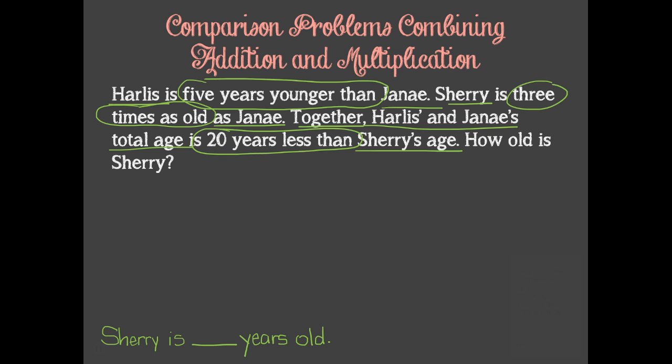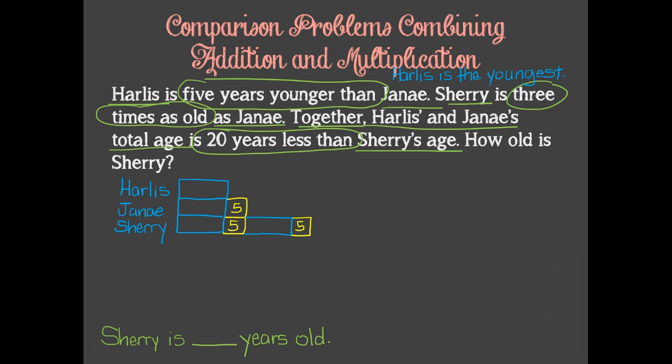Let's start everyone off with equal units this time and adjust accordingly. Since we are told that Harless is five years younger than Janae, that means that Janae is also five years older than Harless, so we can add five units onto Janae's bar. Next, we are told that Sherry is three times as old as Janae, so one time would look like this, and two times would look like this, and three times would look like this. We have to find out how old Sherry is, so our question mark can go here.